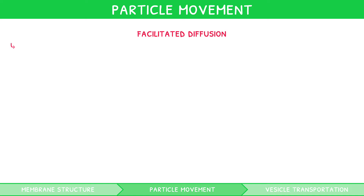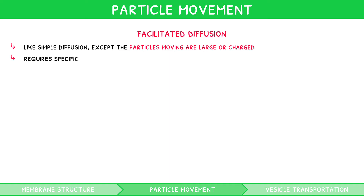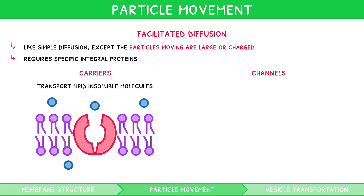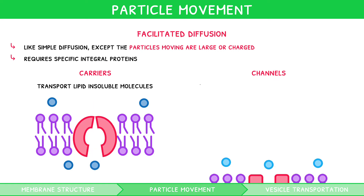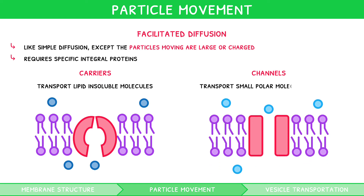Facilitated diffusion is just like simple diffusion, except the particles moving are large or charged, and so they require specific integral proteins. These proteins can either be carriers or channels. Carriers transport lipid-insoluble molecules, for example glucose passing into a red blood cell. Channels transport small polar molecules and ions, for example sodium ions entering nerve cells. This movement of sodium into nerves is explored in greater depth in the latter topics of IB Biology.